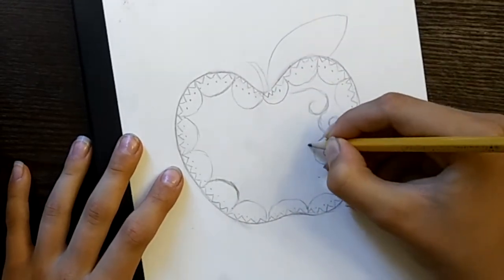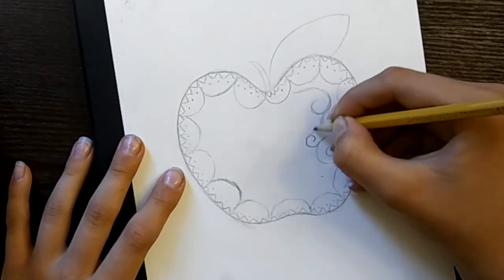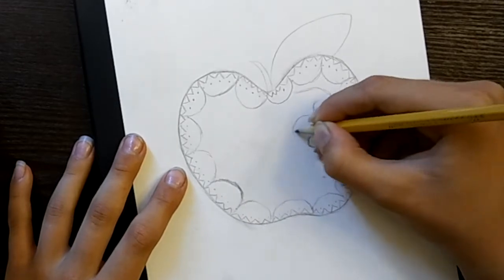After that step, start drawing medium-sized pearls with small ones coming from the side of the apple. Make sure they are all connected to each other somehow.